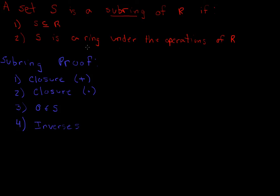Usually that's kind of given — it's kind of just something that's obvious. Usually the rings we select that we want to show are subrings, we usually select them because they are subsets, and it's just usually kind of trivial to show it, so that's the reason I didn't mention that.